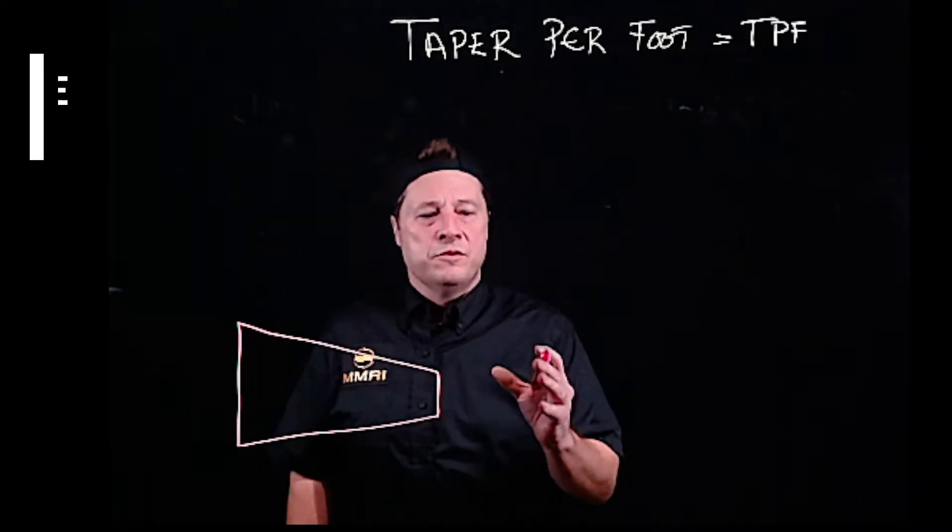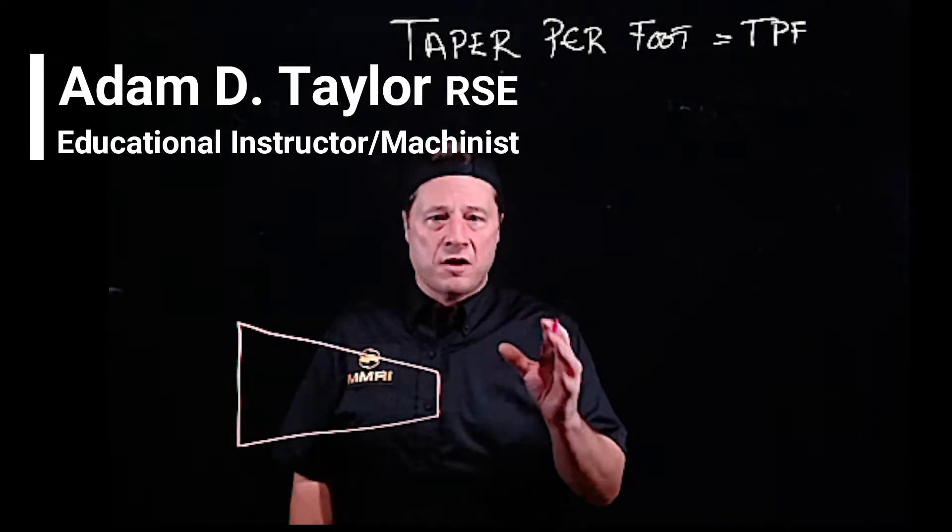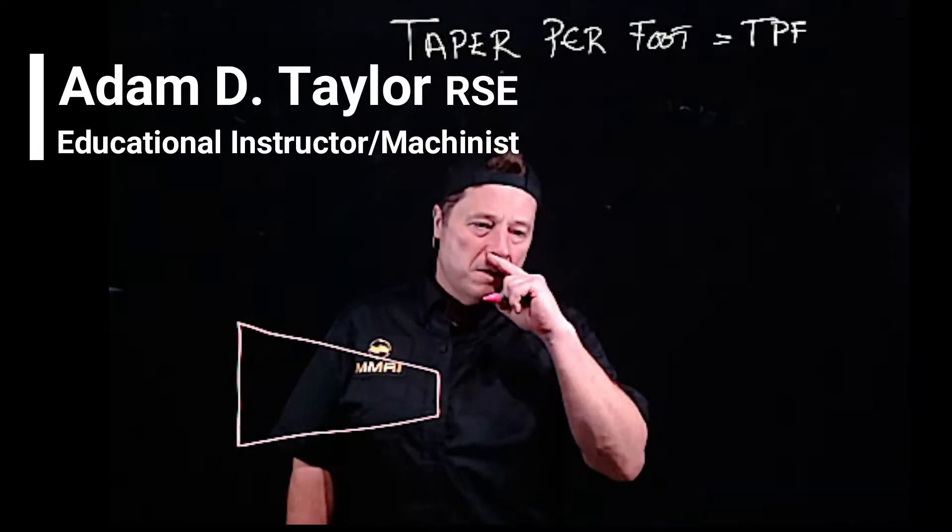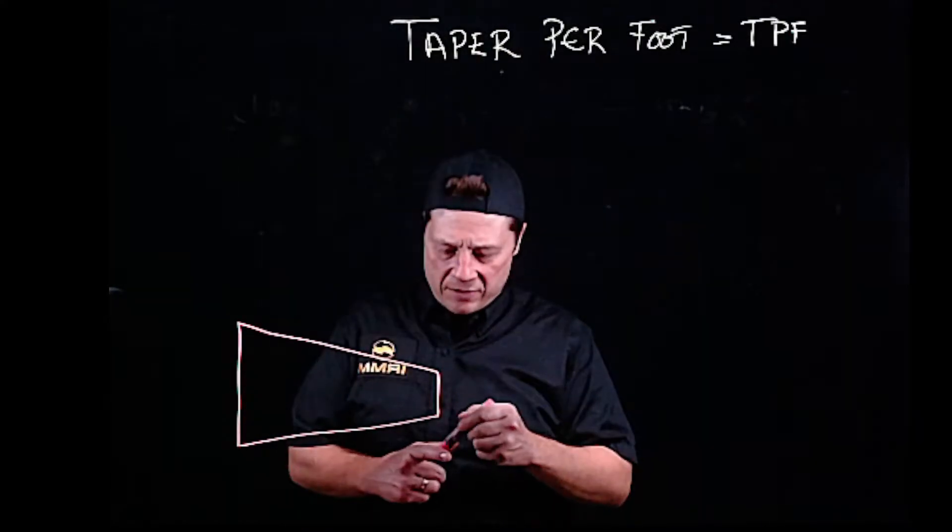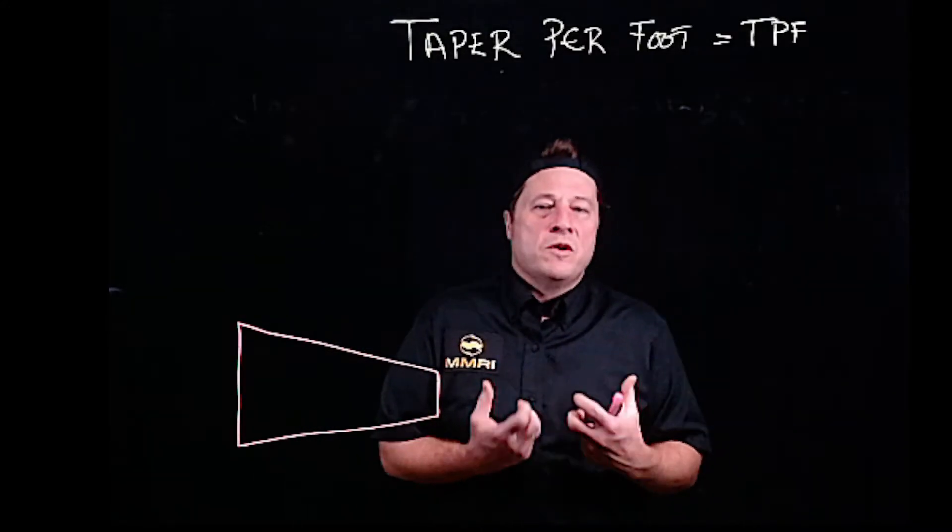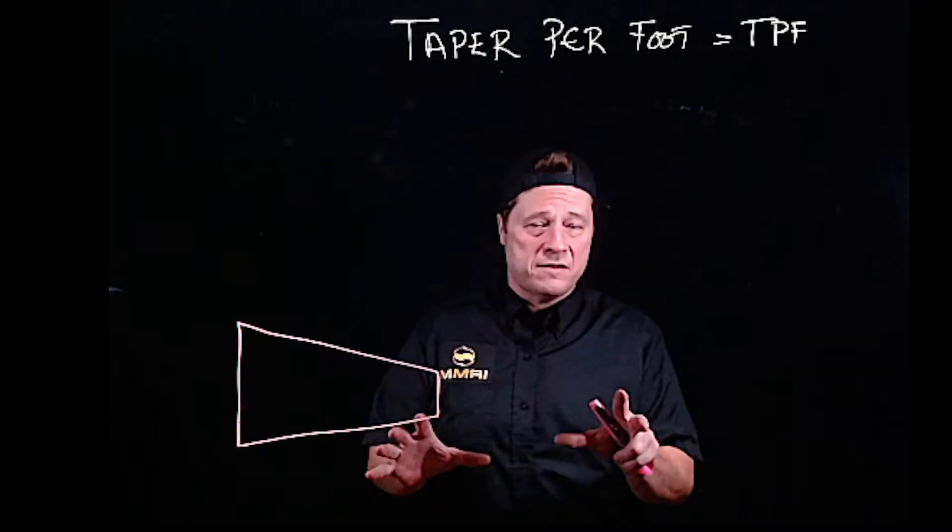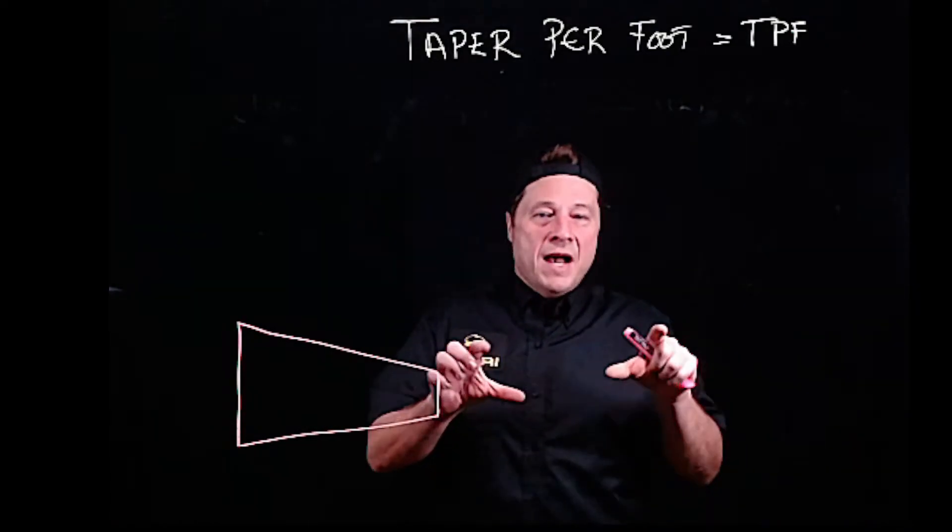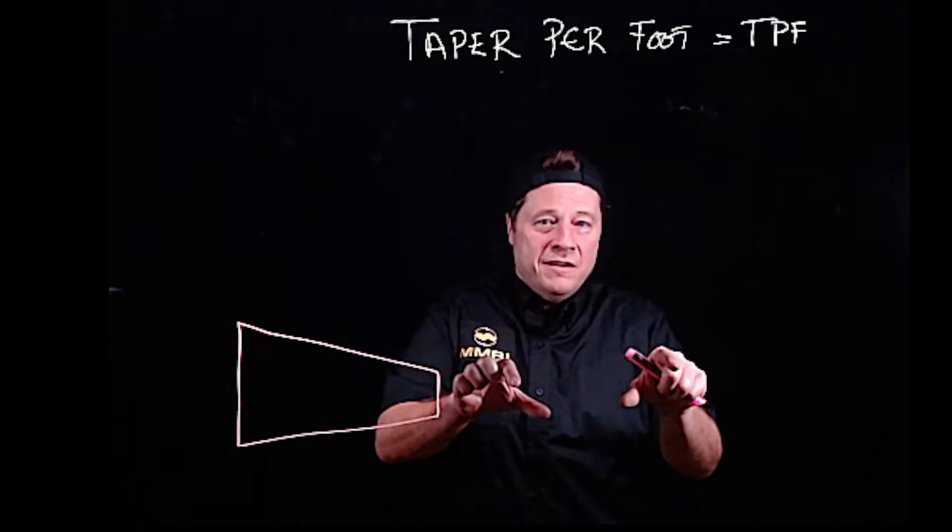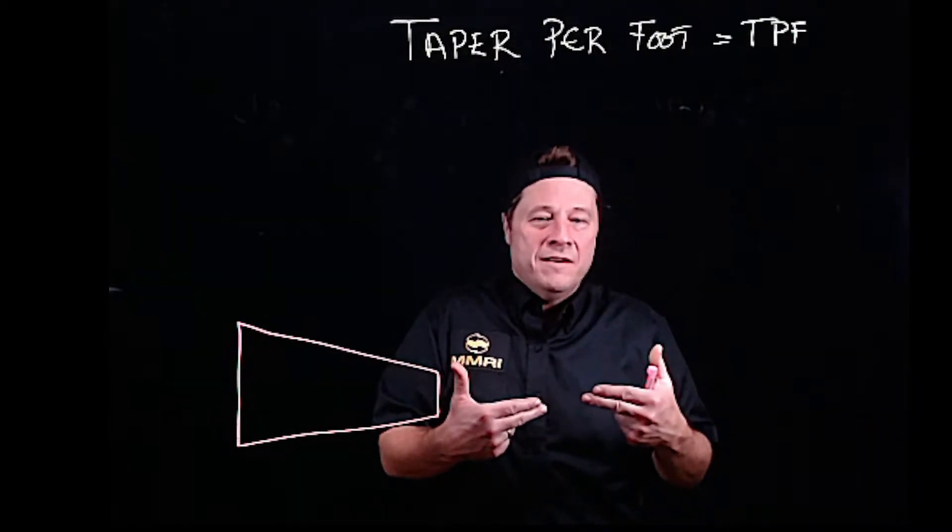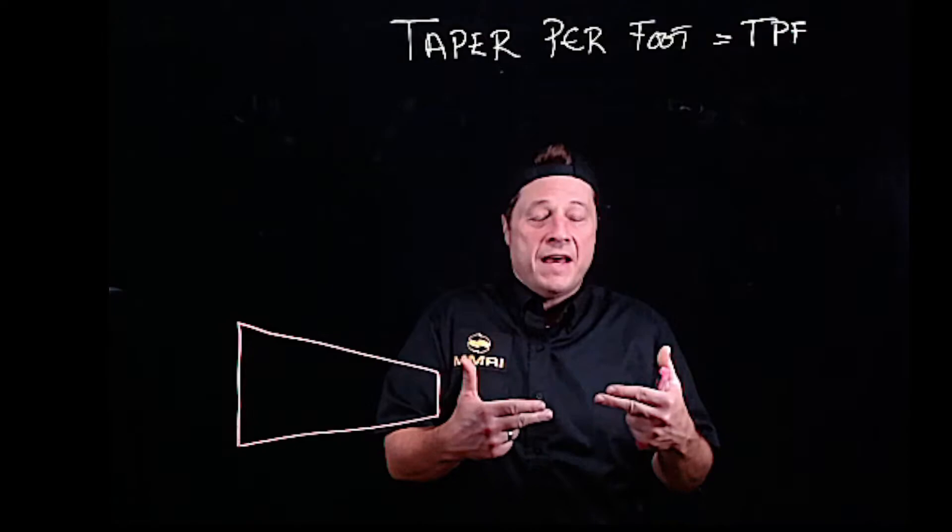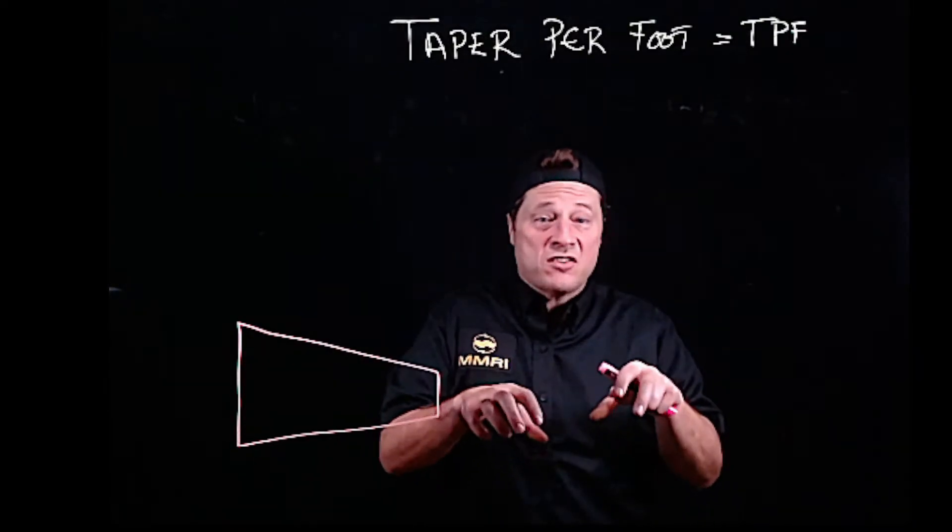Okay, the next formula we're going to discuss is the tailstock offset. Remember, that's us being able to take the math and figure out how to apply it. We'll figure out the formula in a second, but the whole purpose of solving this is so that we know how far away or how much to pull that upper casting.